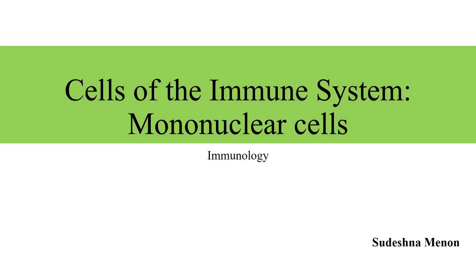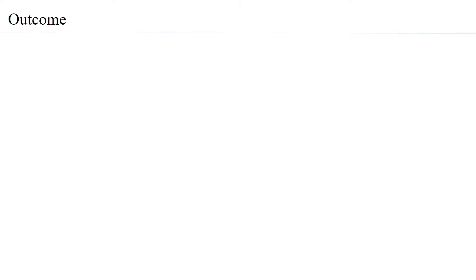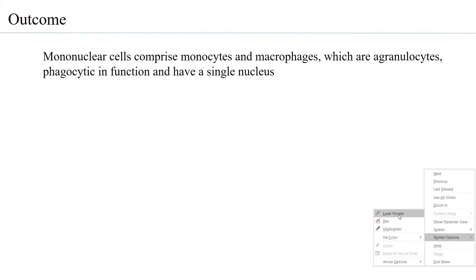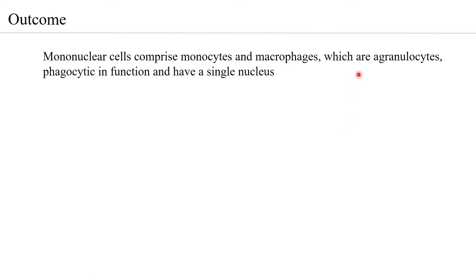Let us look at the learning outcomes of the session. Mononuclear cells comprise monocytes and macrophages, which are agranulocytes — that means these cells do not have granules in their cytoplasm. They just have a single nucleus and they are phagocytic in function, which means they are able to engulf foreign antigens and destroy them.